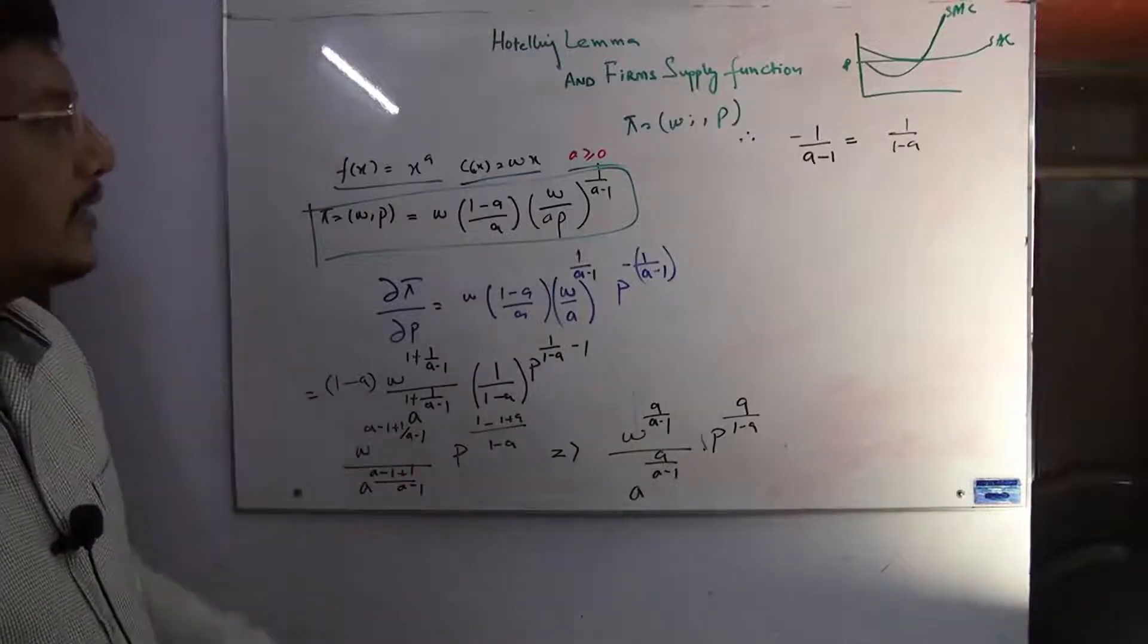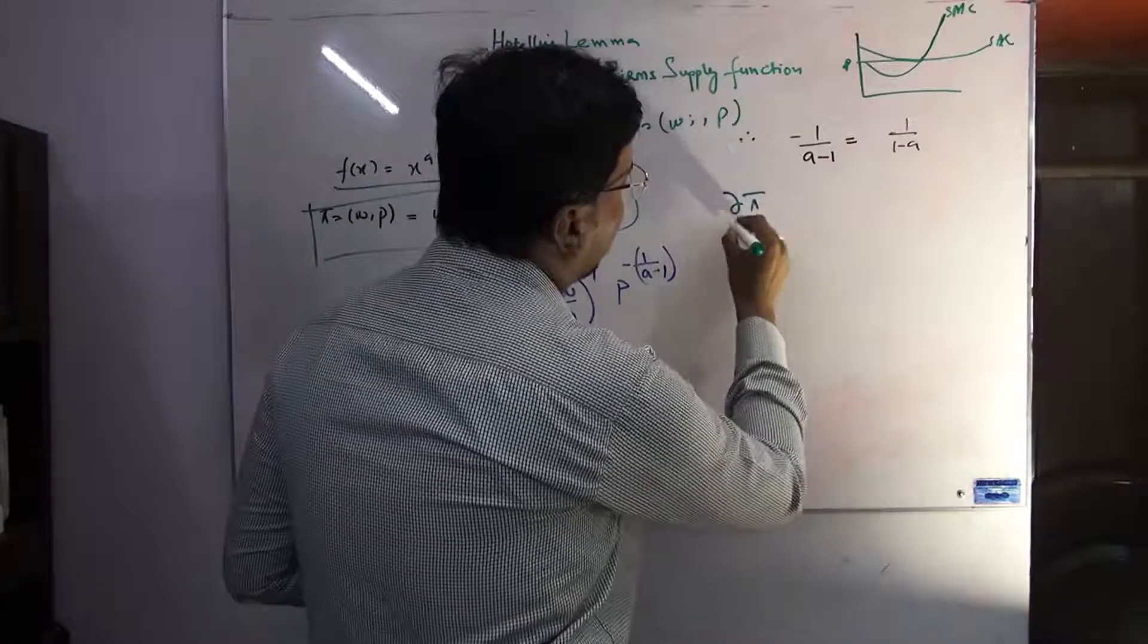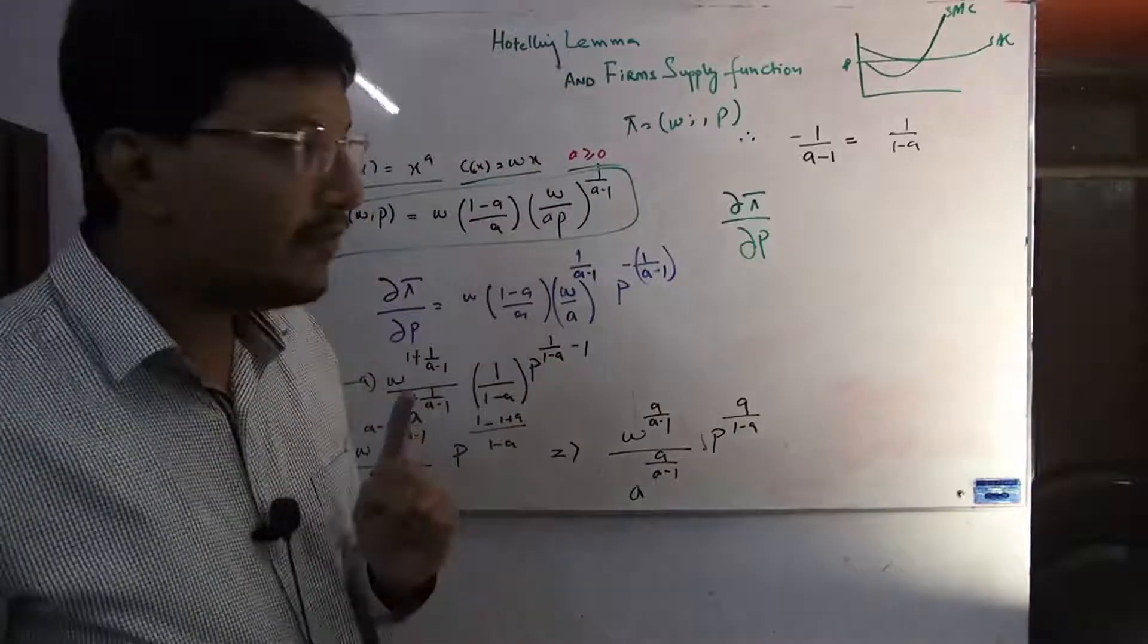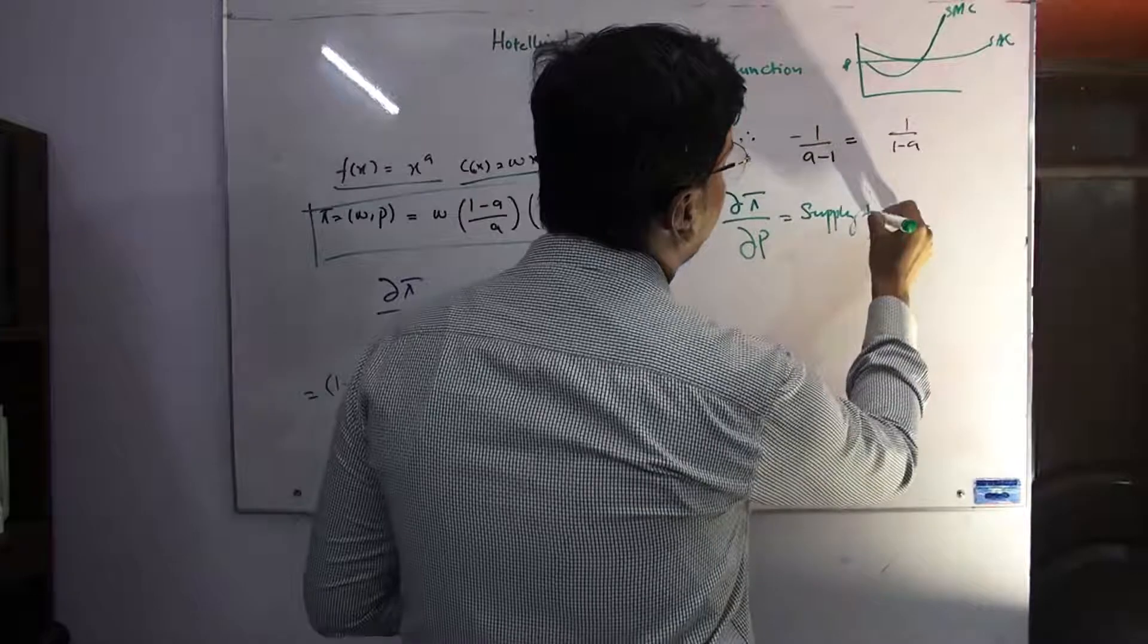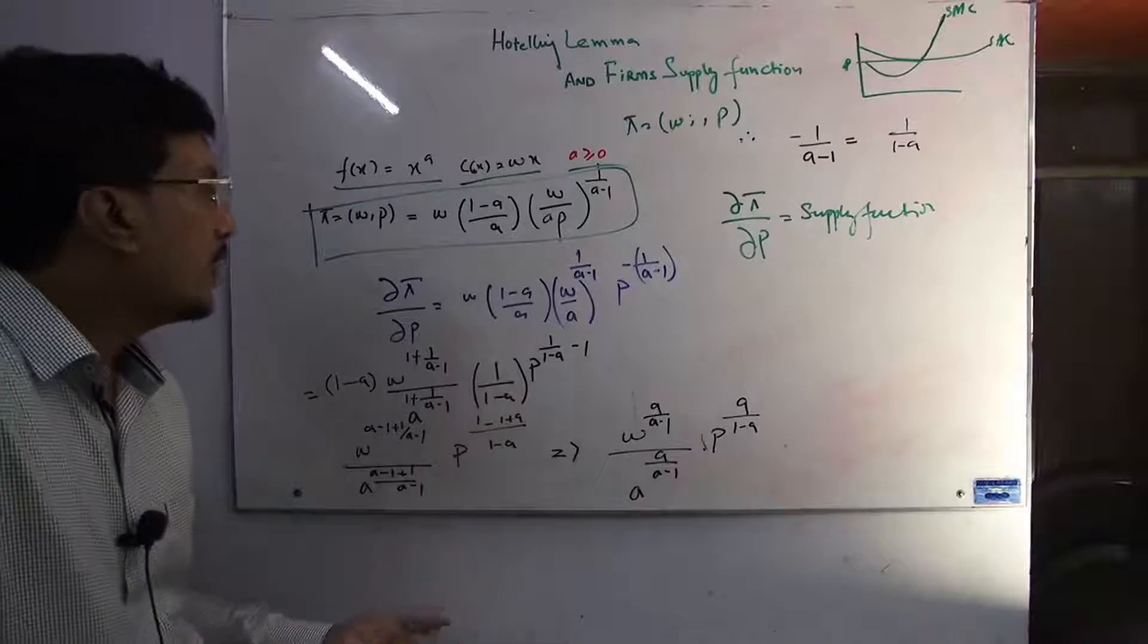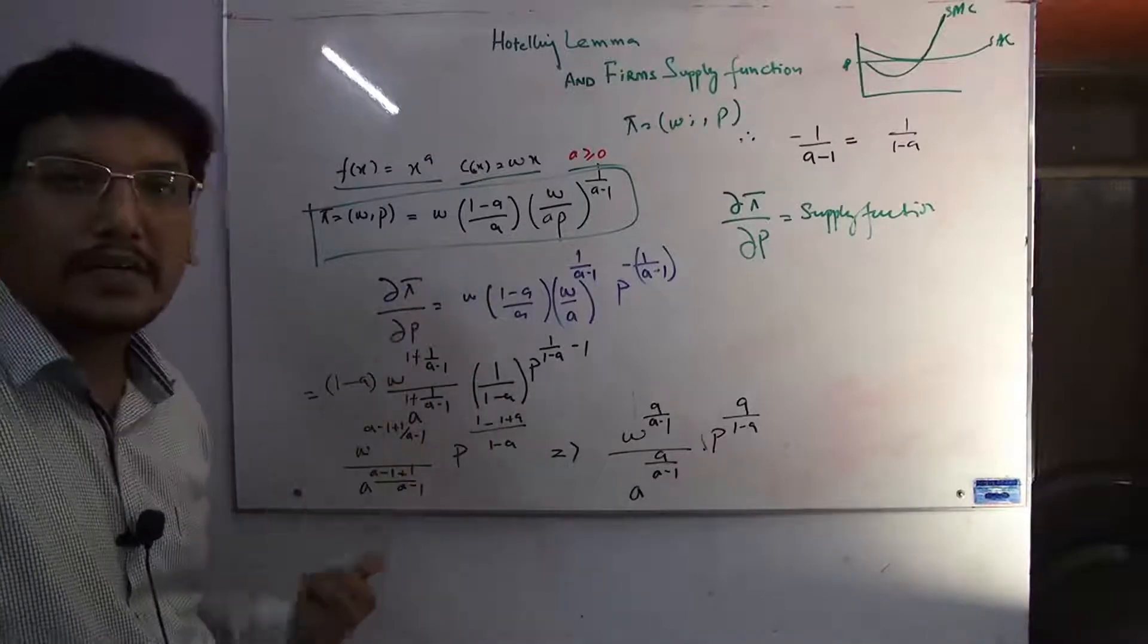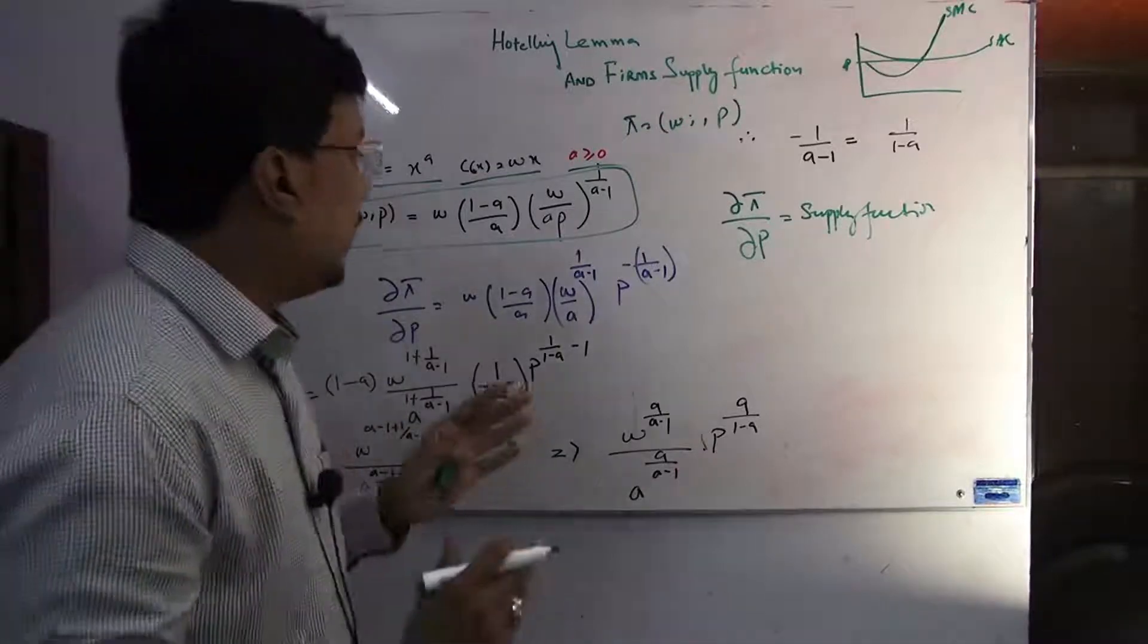What is basically the Hotelling lemma? Hotelling lemma says that if you take the derivative of the profit function with respect to output price, you can easily get the firm's supply function. Very easy, very important. Let's see what is happening here.